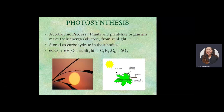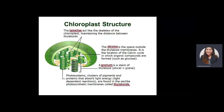The chloroplast is the site where sunlight is captured and where glucose is created. Let's familiarize ourselves with the different organelles of the chloroplast. We have the lamella, stroma, granum, and thylakoids. Lamella acts like a skeleton of the chloroplast — it maintains the distance between different thylakoids.